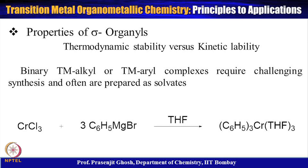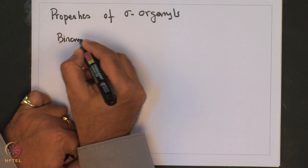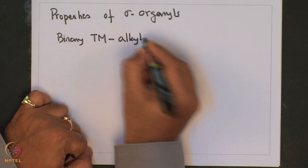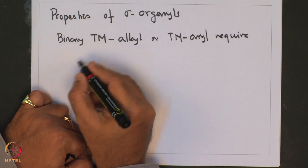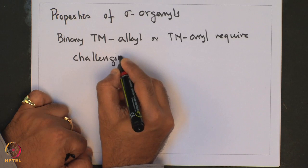These complexes were initially thought to be thermodynamically unstable, as they were very difficult to prepare. But later on, it was found that they are indeed thermodynamically stable, but their instability arises from their excessive kinetic reactivity. Hence, preparation of binary transition metal alkyl or aryl requires challenging conditions.